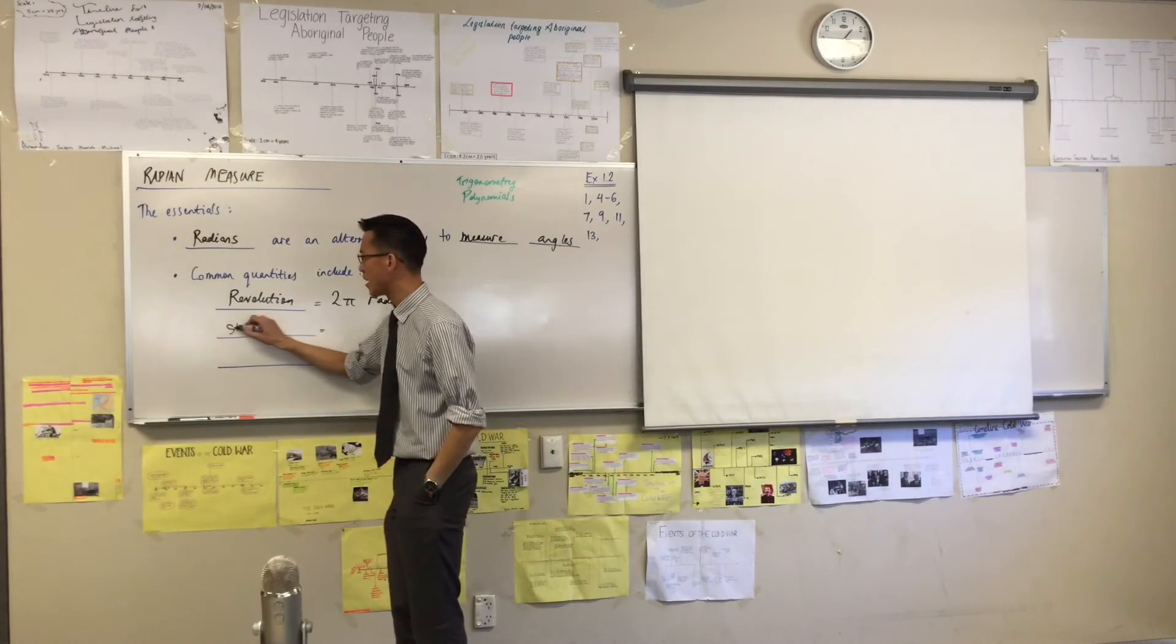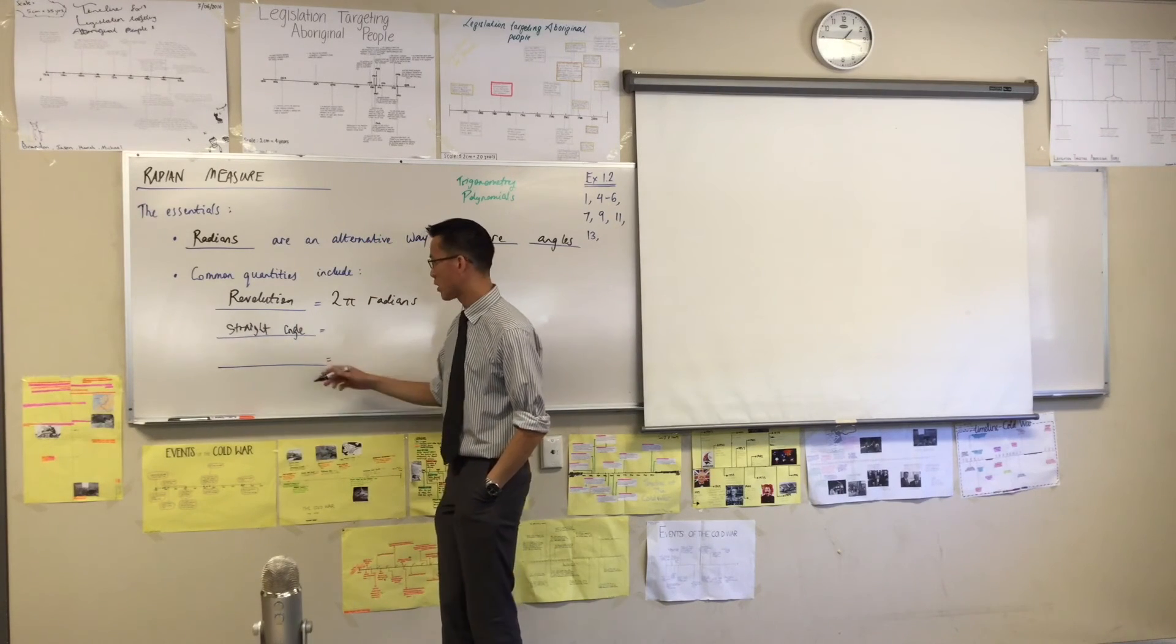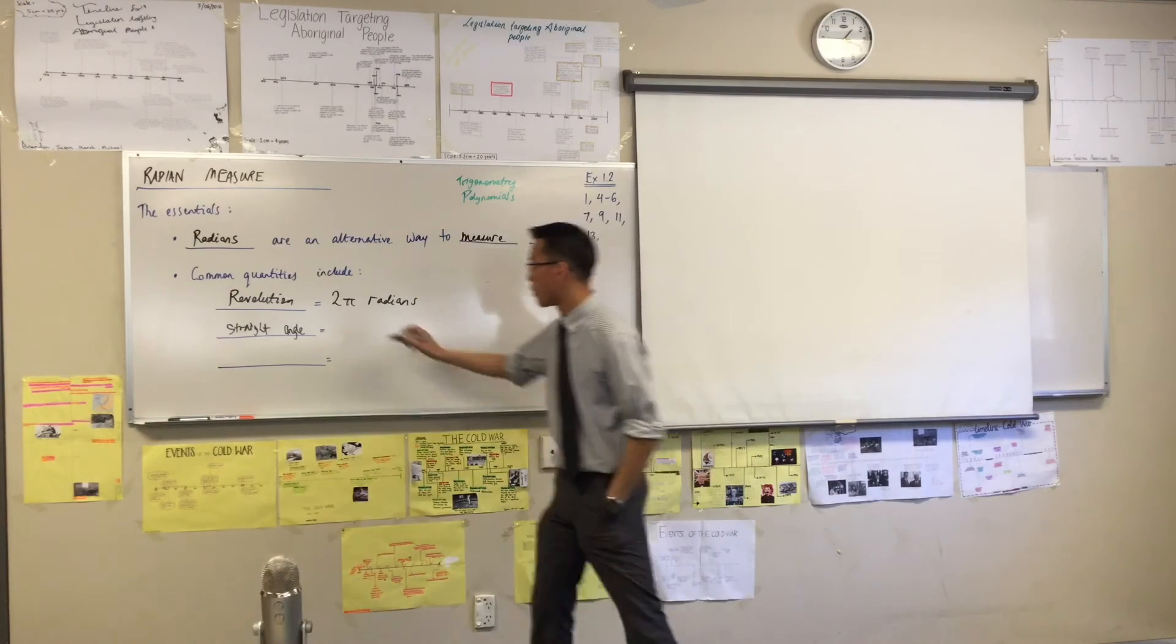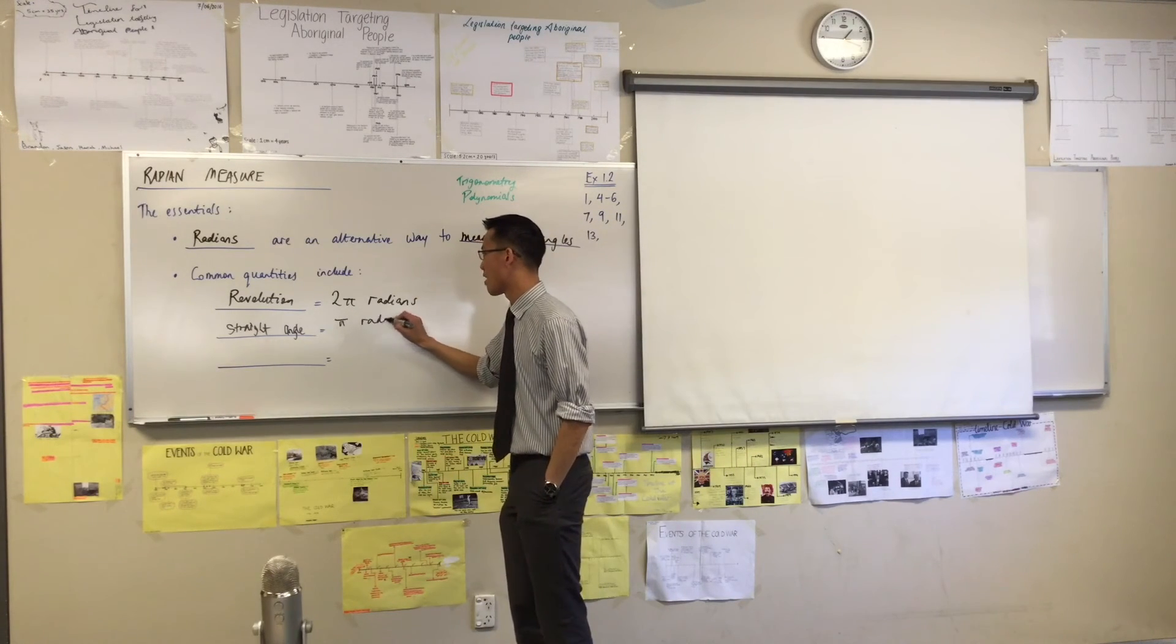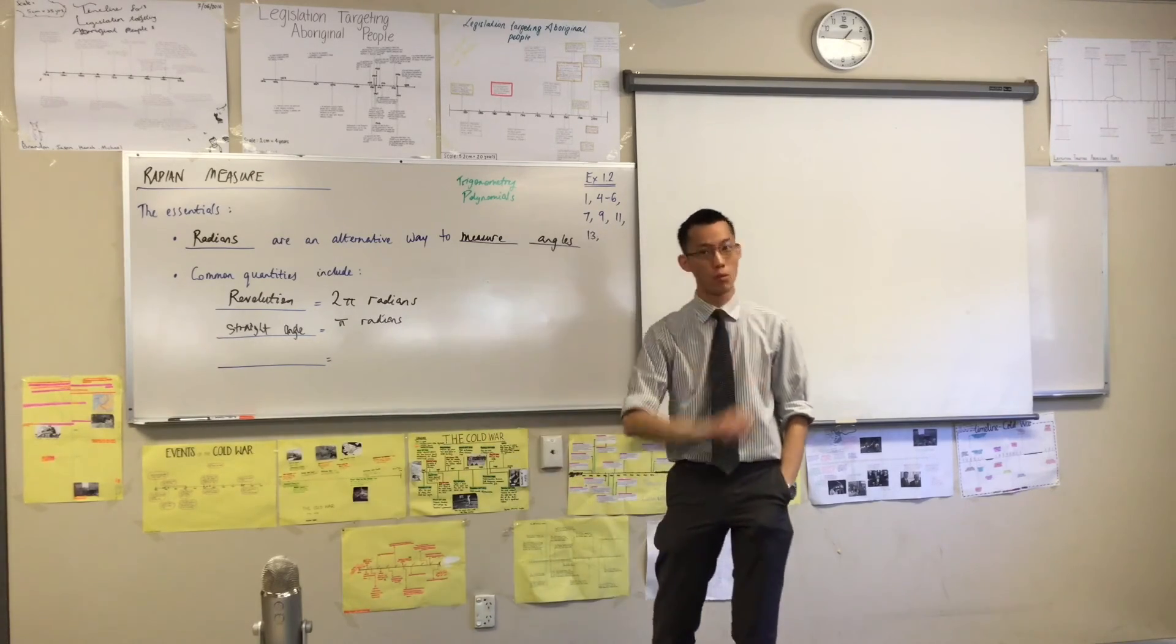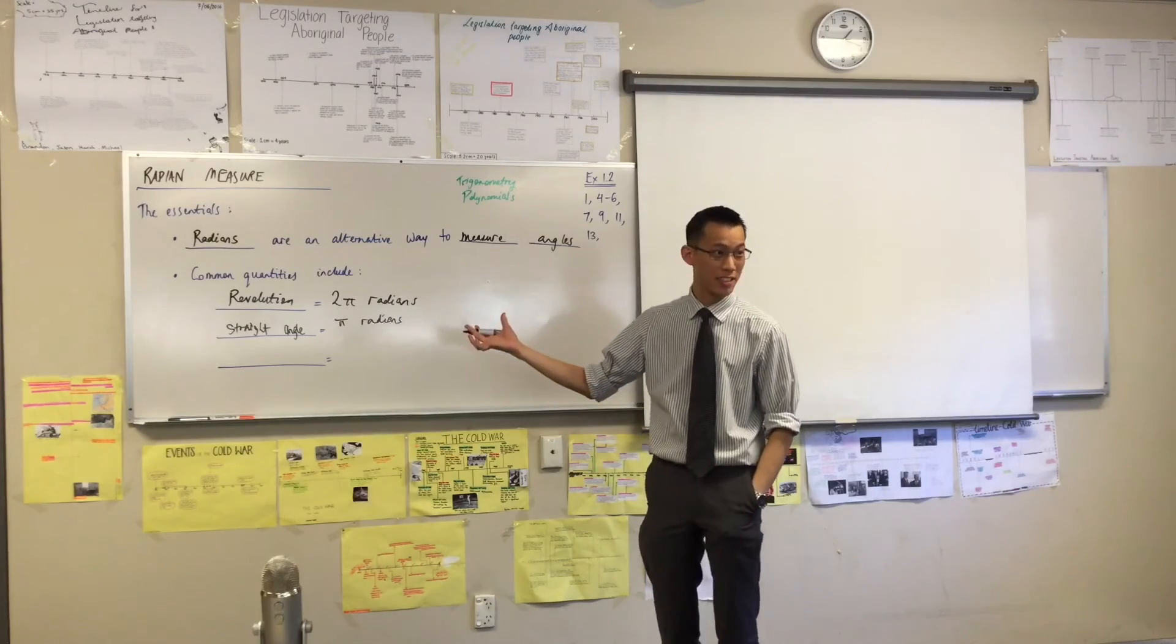So if a revolution all the way around is 2π radians, what would a straight angle, half a revolution, be? It's just going to be π. So π radians will take you halfway around a circle, 2π radians will take you all the way. What do you think might be one common sense final common quantity to include on that?